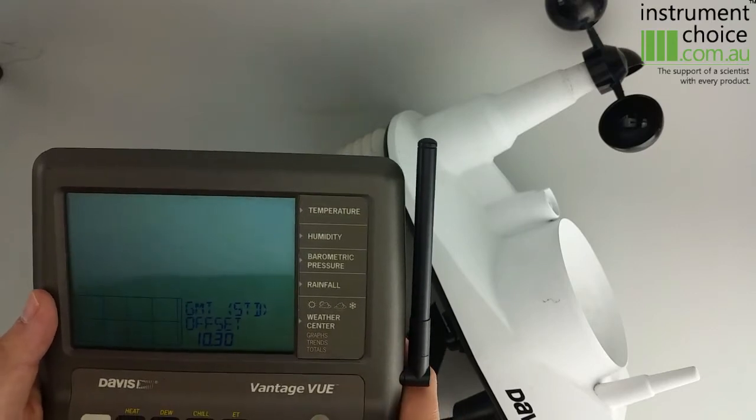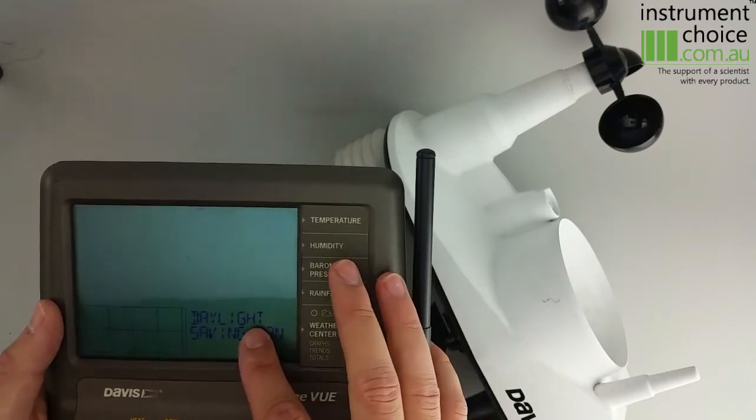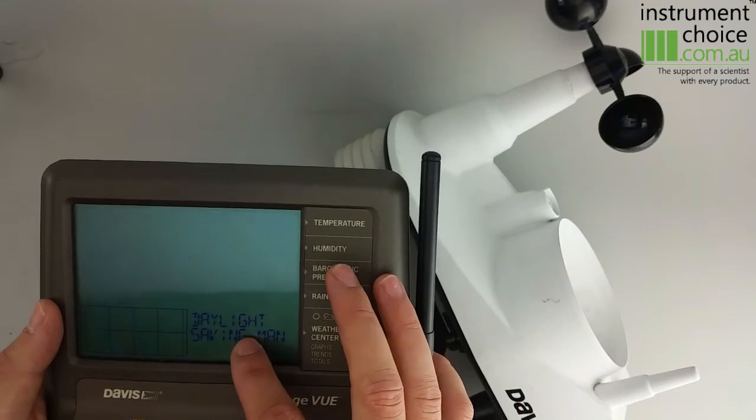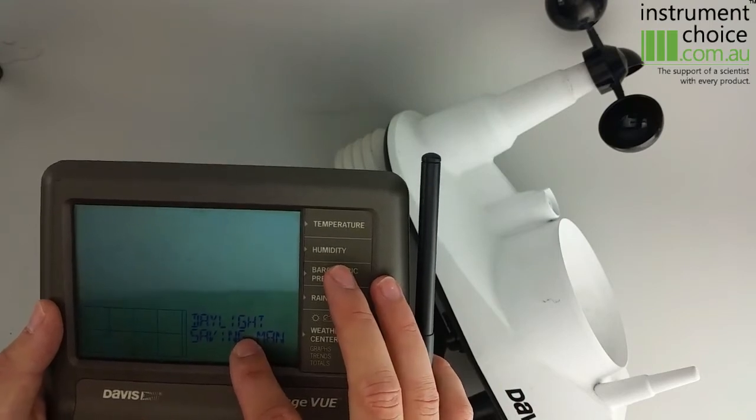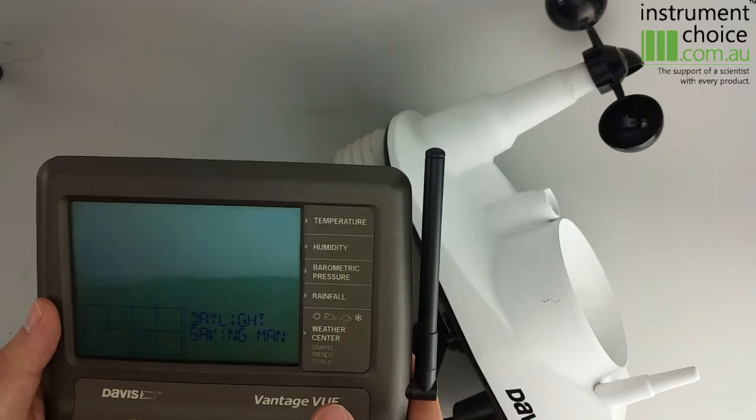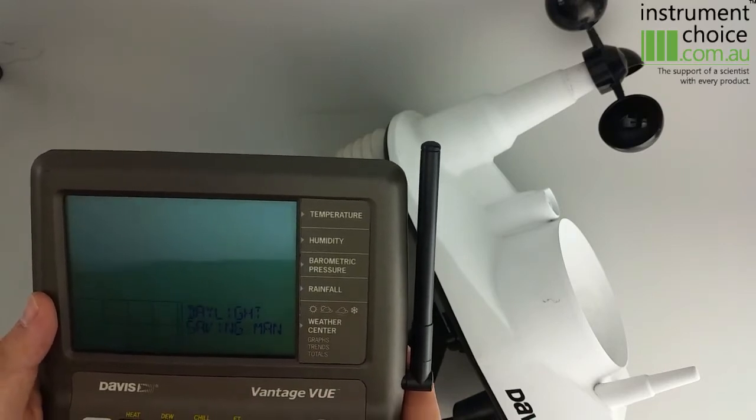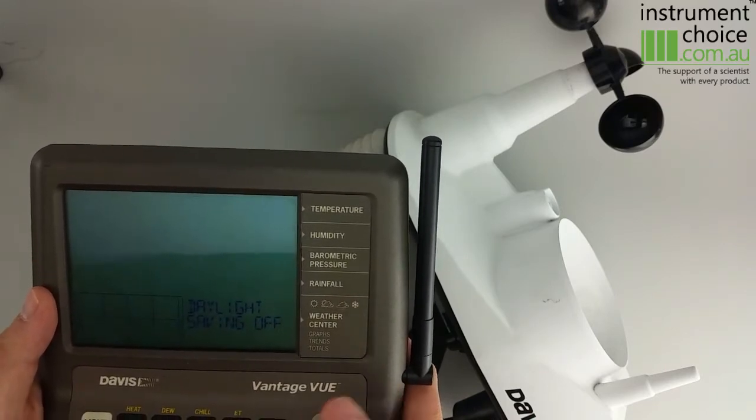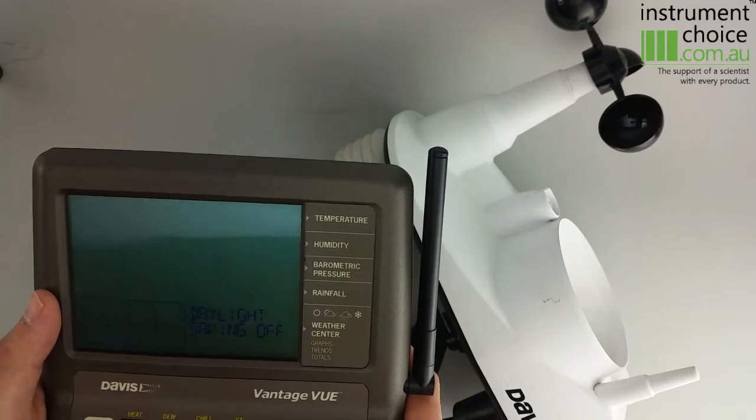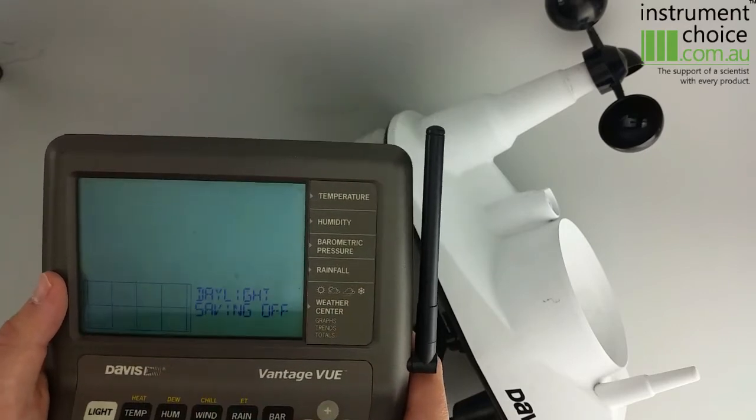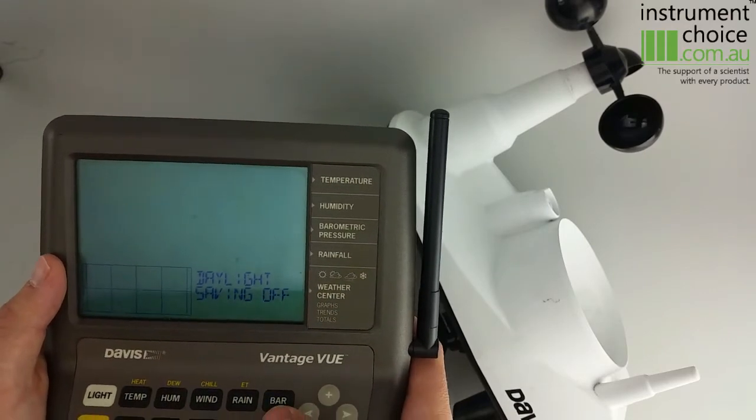When you hit done, the next screen will allow you to set your daylight savings. In this case, we've set it to manual, and then the next screen will allow you to leave it off. This means that when daylight savings change, you'll need to come through and update it.